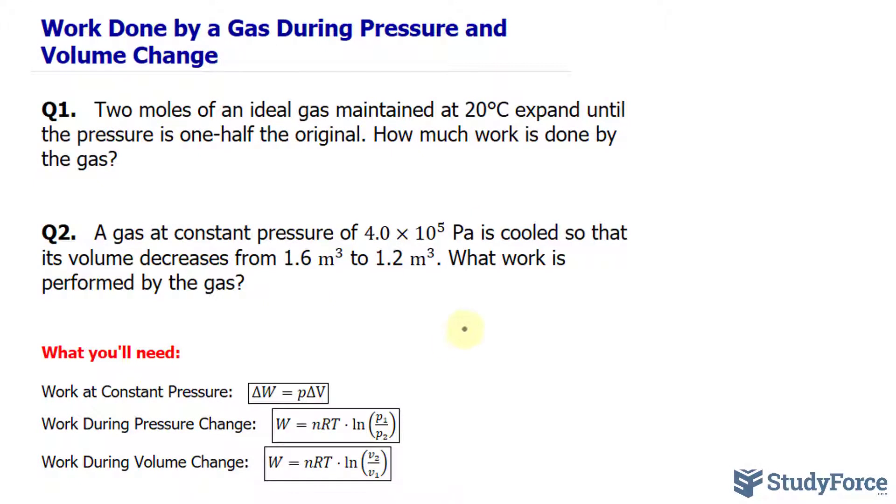So how do we work this formula? We have W equals n being the number of moles, in this case it's 2, multiplied to r, which is the gas constant equal to 8.3145 joules per mole times Kelvin. And subsequently that gets multiplied to capital T, which is the temperature. 20 degrees needs to be converted into Kelvin so that they cancel out with this Kelvin, so we add 273.15.